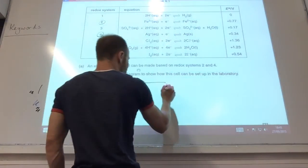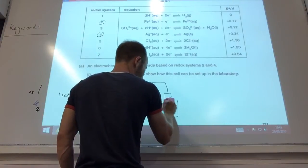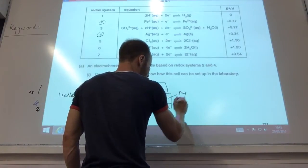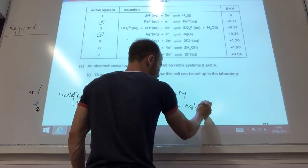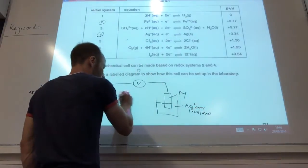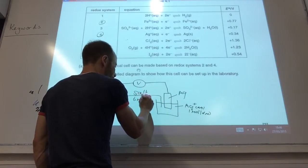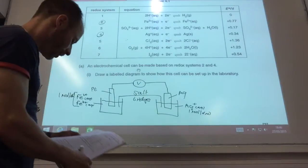Oh, number 4 has got silver, so I can use a silver electrode for that. So that's good. Ag, and this one is just going to be Ag+ aqueous, again at one mole per decimetre cubed. And then, going across, I have my salt bridge, like so.